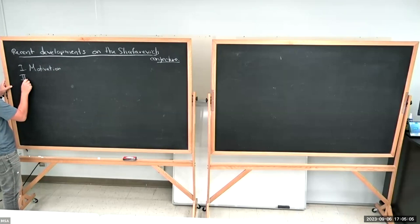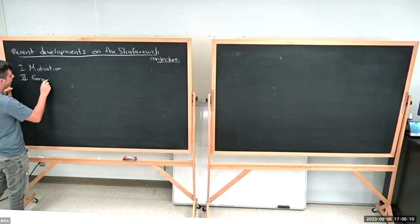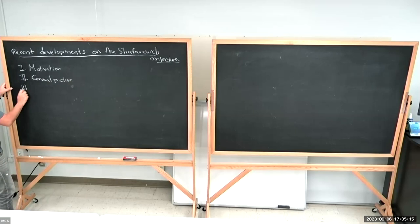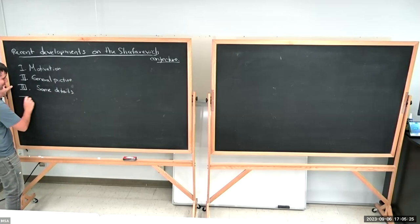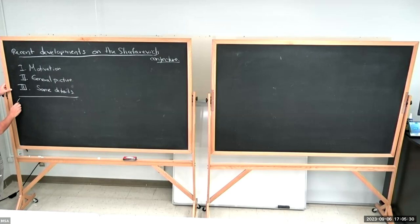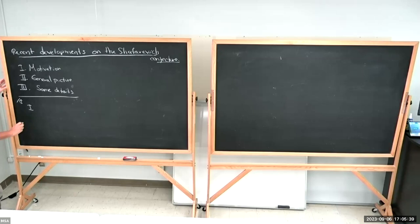In the first part I'm going to talk about the motivation, then I'll talk about some general features. Everything I will say is going to be over the complex numbers. Let me start with motivation.